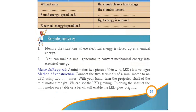You can make a small generator to convert mechanical energy into electrical energy. Connect the two terminals of a mini-motor to an LED using two thin wires. With your hand, turn the projected shaft of the mini-motor strongly, and you will see the LED glowing.